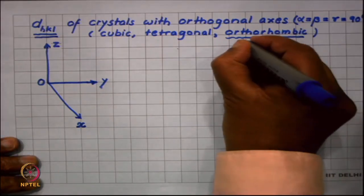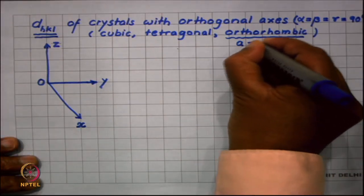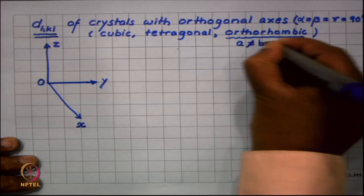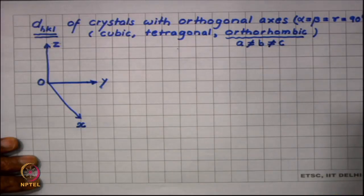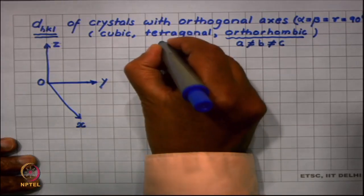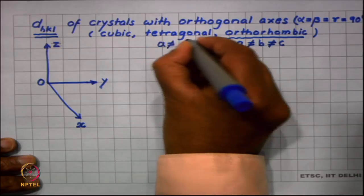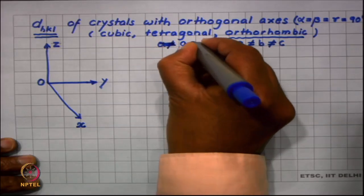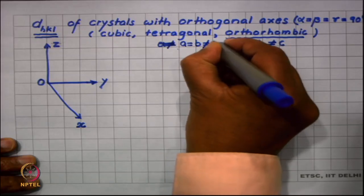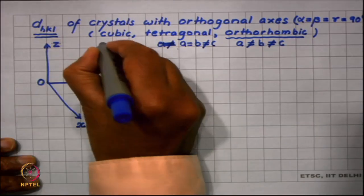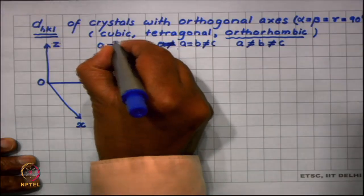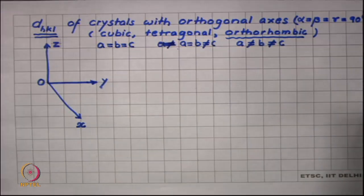All of them have alpha, beta, gamma equal to 90 degrees. Orthorhombic has three lattice parameters not equal: a not equal b not equal c. Tetragonal has a equals b and not equal c. And in cubic all are equal. Let us start with the general case of orthorhombic system.